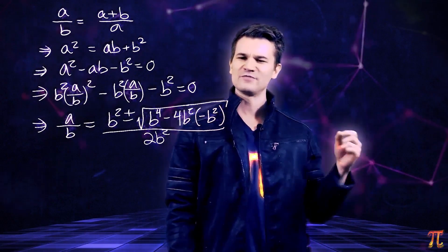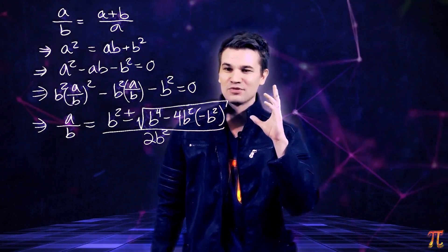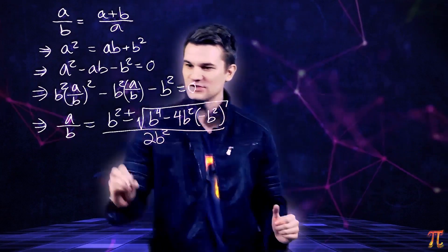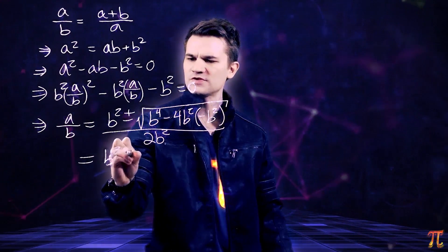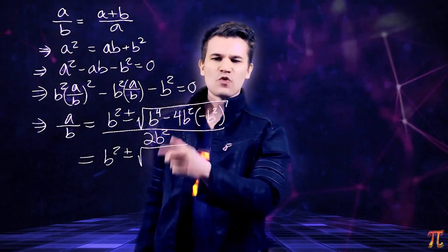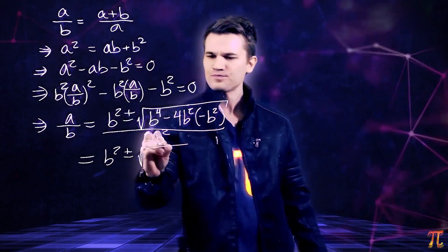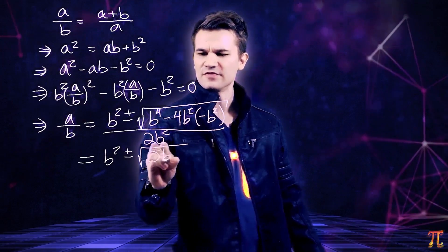And the square root of five b to the fourth could be written as the square root of five times the square root of b to the fourth, which is b squared.